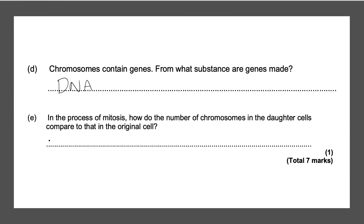Final question: in the process of mitosis, how do the number of chromosomes in the daughter cells compare to that in the original cell? This is trying to trick you, but the answer is actually really simple — they are the same. That gives you one mark. That's it for this video, thanks for watching. Please subscribe and hit the like button.